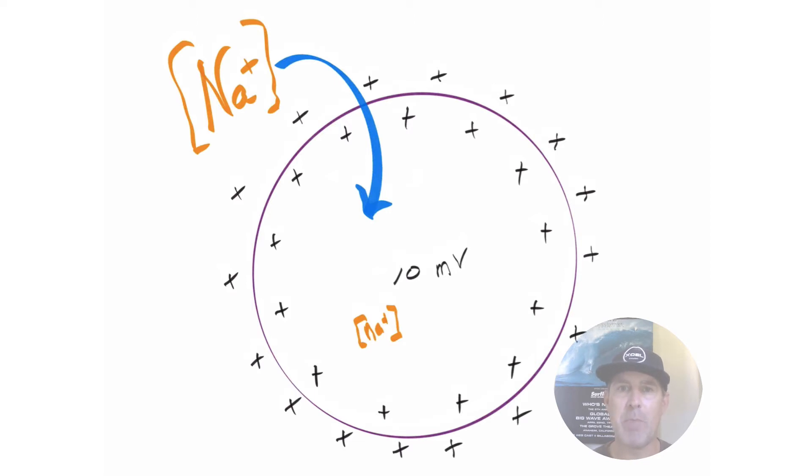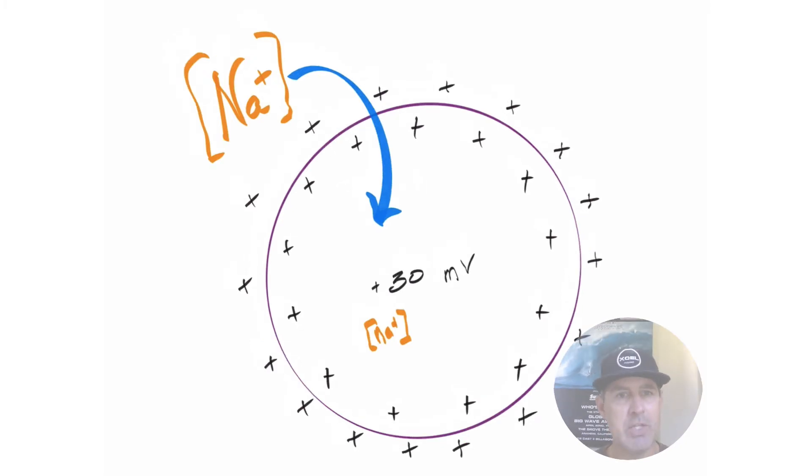As sodium starts moving into the cell, the cell starts becoming more positive. Certainly, I could have gradually shown this from negative 70 to negative 60 to negative 50, so on and so forth. And just so we're clear, negative 60, while it sounds pretty negative, which it is, it is more positive or less negative than negative 70. And that may sound intuitive to you, but it's not crystal clear to a lot of us when we're first looking at these numbers. But as sodium moves into the cell, the cell becomes progressively more positive. As we can see in this cell, sodium is continually coming down its chemical gradient. We're now at positive 30 millivolts.